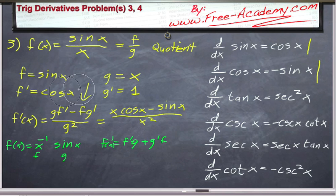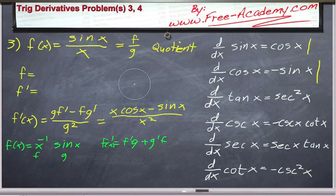So let me clear up a little bit of room here. We called f is equal to x to the negative first, and g is equal to sine of x. So f prime is going to be negative x to the negative 2, and g prime is going to be equal to cosine of x.